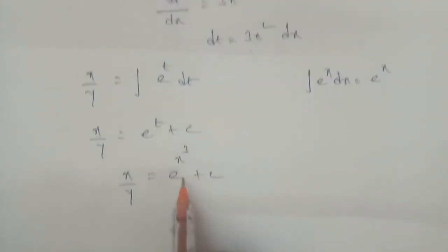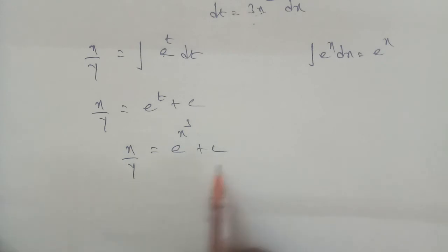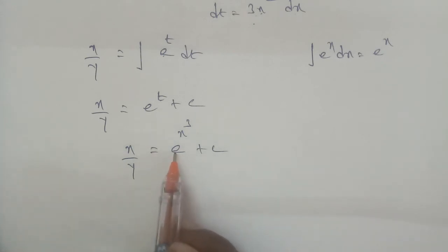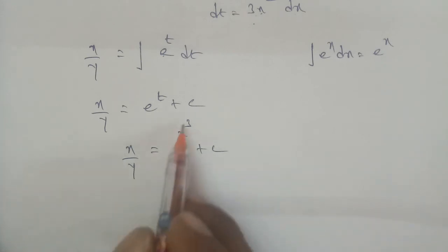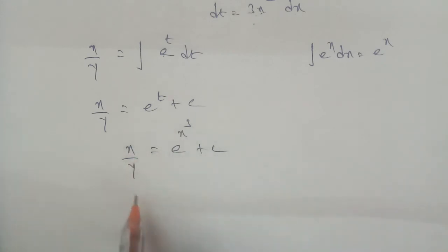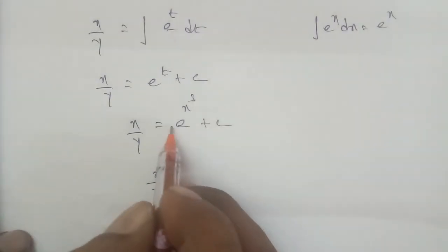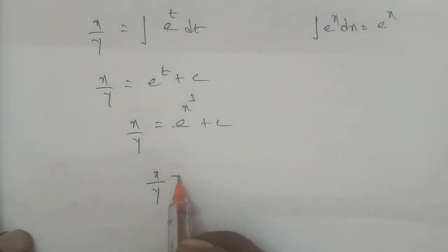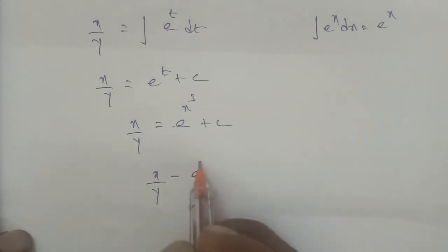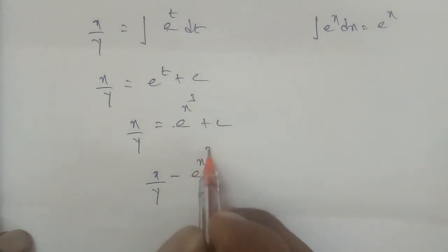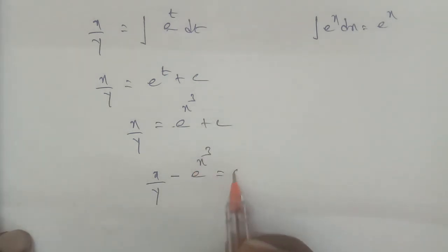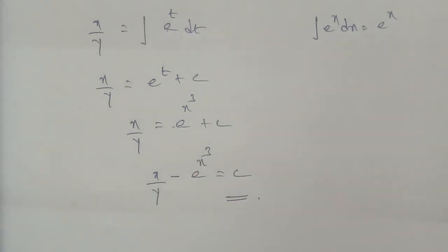So the complete solution is x by y equals e to the power x cubed plus C. This is the final answer. Thank you.